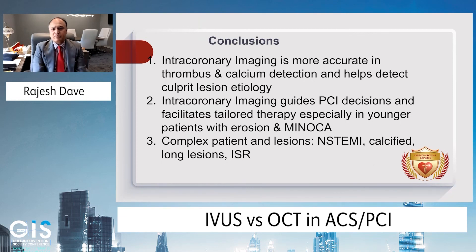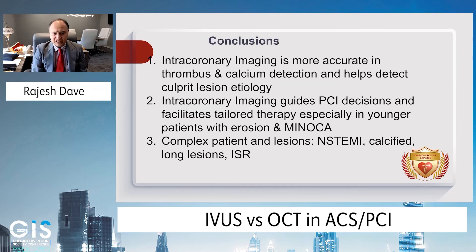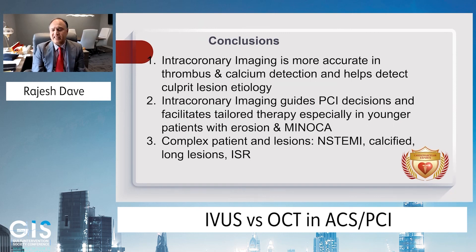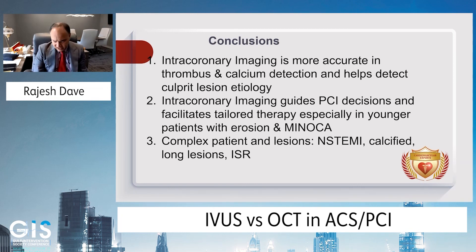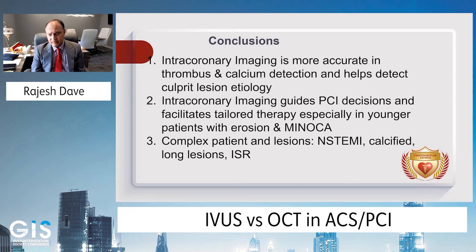In conclusion, intracoronary imaging is more accurate in thrombus and calcium detection and helps detect the culprit lesion etiology. Intracoronary imaging guides PCI decisions and facilitates tailored therapy, especially in younger patients with erosion and MINOCA, as well as in patients with complex lesion subsets such as non-STEMI, calcified long lesions, and in-stent stenosis. In all of those lesions, you can gain significant insight into vessel diameter, lumen diameter, and plaque morphology, which can guide decision-making regarding your PCI armamentarium as well as stent optimization. Thank you very much, and I'm open for any questions.